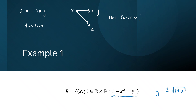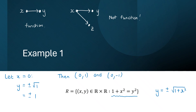We get this by taking the square root on both sides. Now, suppose we let x equal 0. Then y must be equal to plus or minus the square root of 1, so y equals plus or minus 1. We get two different y values related to the same x value. So 0 is related to 1, and at the same time 0 is also related to negative 1.